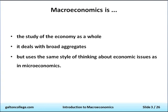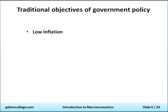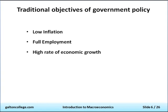The traditional objectives of government policy normally include things like low inflation, which is considered to be desirable. The government would also try to get full employment, which is also desirable, as is a high rate of economic growth, a balance of payments equilibrium, and some fairness in the system so we don't have a few very rich people and the vast majority living in abject poverty.